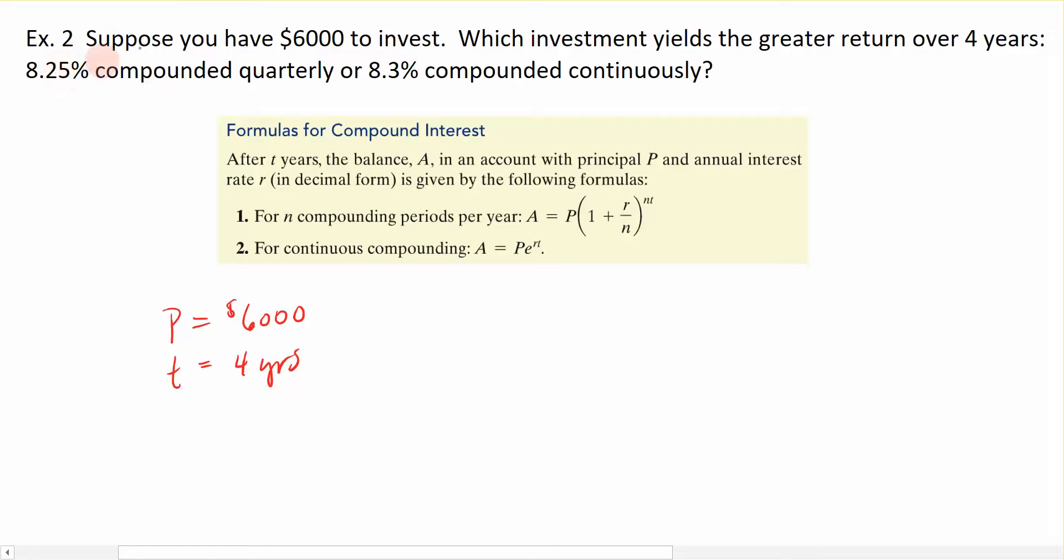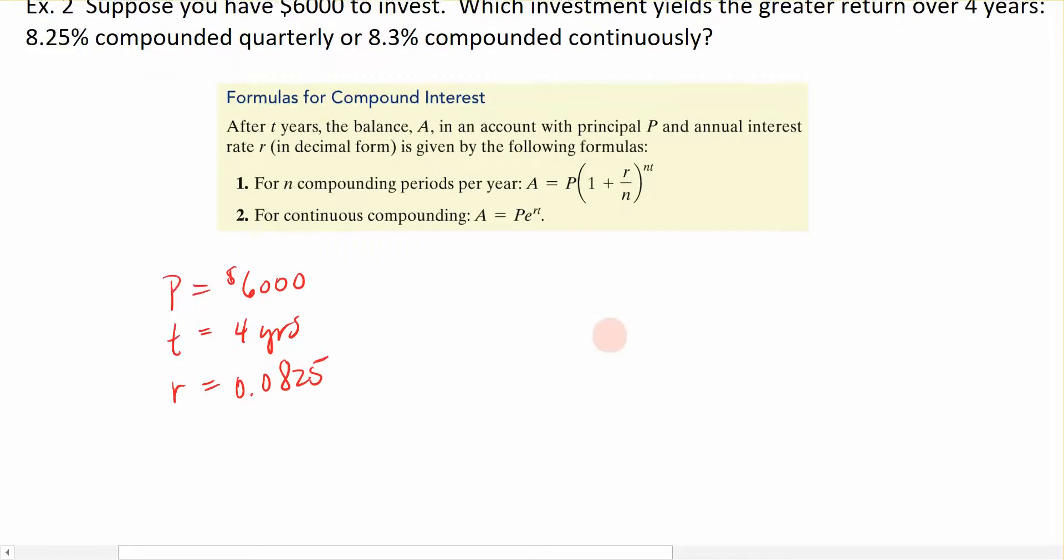And we have two separate interest rates. We have an interest rate over here for compounding quarterly. So this rate, which is written as a decimal of .0825. And when it says that it's compounding quarterly, that is the compounding during the year, which is represented by the letter N. So if I compound it quarterly during the year, that means I compound it four times during the year.